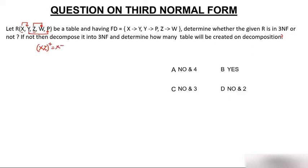Let's find the closure of XZ. XZ closure starts with XZ. Using X we can write Y; using Y we can write P; using Z we can write W. With the help of XZ we are able to determine all the attributes of the table. This means XZ is a candidate key, and only XZ will be the candidate key because adding any attribute to XZ would make it a super key, not a candidate key.